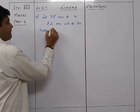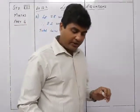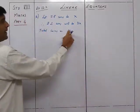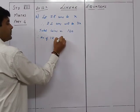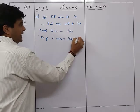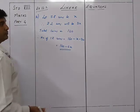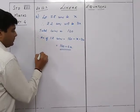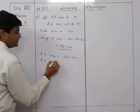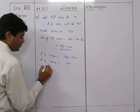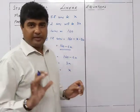Total coins = 160, so the number of 1-rupee coins = 160 minus x minus 3x = 160 minus 4x. So: 1-rupee coins = 160 minus 4x, 2-rupee coins = 3x, and 5-rupee coins = x.